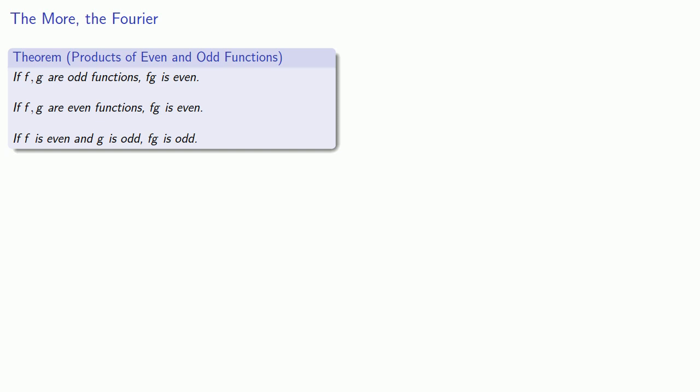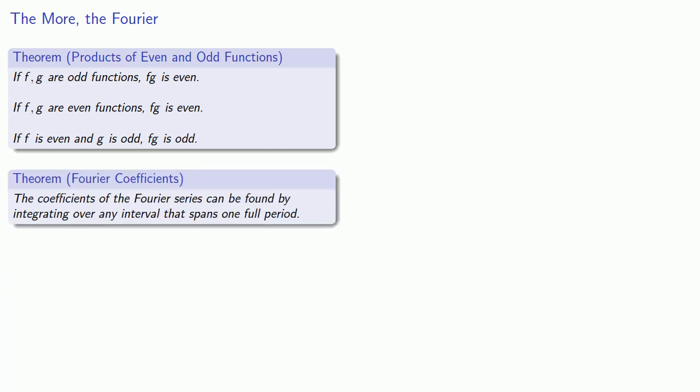Now, by itself, this isn't very useful. But we'll bring in another theorem, which reminds us that the coefficients of the Fourier series can be found by integrating over any interval that spans one full period. The significance of this theorem is that it means we can move the interval of integration to anywhere we want.